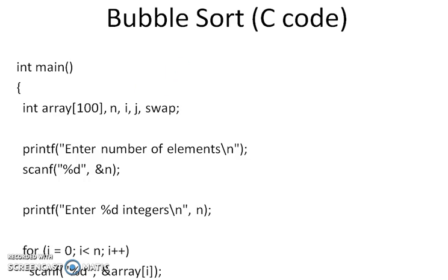Here is the C programming code for Bubble Sort. Integer array of 100 elements, there are n number of elements. And this part is to take all the elements from the user. Once all the elements are taken into array element.